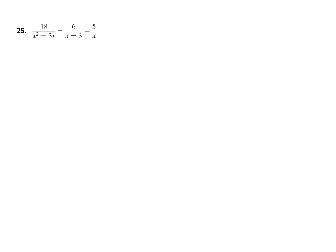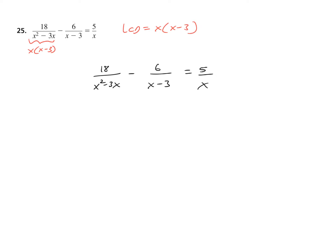While you're deciding what the LCD is, I'm going to rewrite it over here in the center. This gives me X squared minus 3X in the denominator, minus 6 over X minus 3 equals 5 over X. Did you find the LCD? It is X times quantity X minus 3 because X squared minus 3X factors to X times quantity X minus 3, which are the other two unique bases on the other denominators.